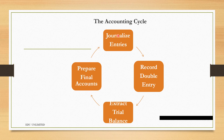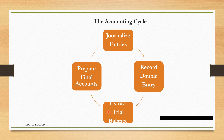It must be noted that the information used to journalize entries can be gathered from source documents. Some accounting cycles include a first step called source documents before journalizing entries, but for simplicity we will use this simplified version. It must also be noted that after recording double entries, some cycles include a stage for balancing off, and before preparing final accounts, some include a stage for adjustment of accounts.